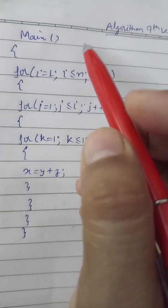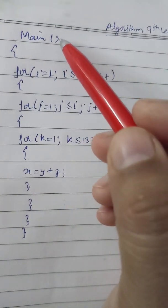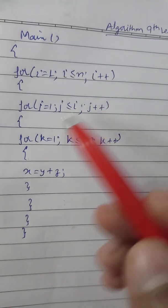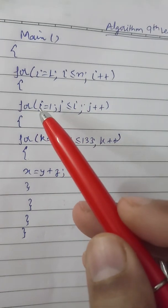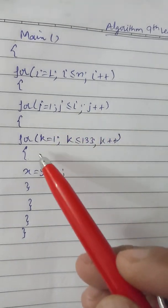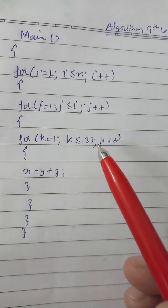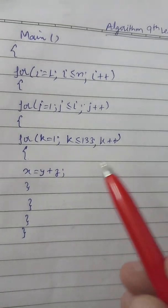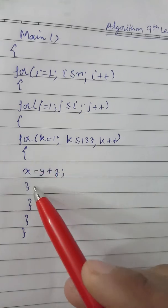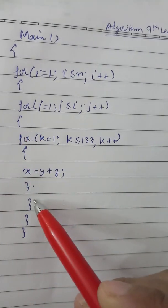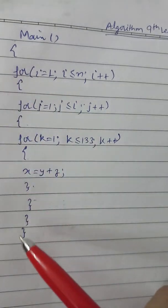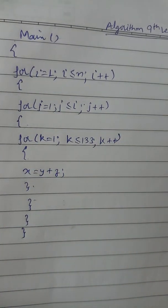Find the time complexity of a program which has a main function with a for loop where i equals 1, i less than n, i plus plus. Inside, another for loop where j equals 1, j less than or equals to i, j plus plus. Inside that, another for loop where k equals 1, k less than 133, k plus plus, with a statement x equals y plus z. Then all loops and main are closed.